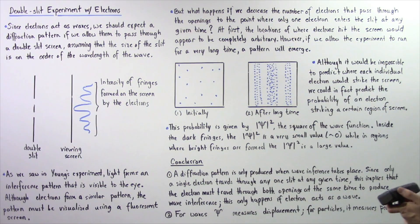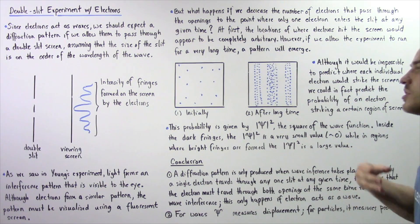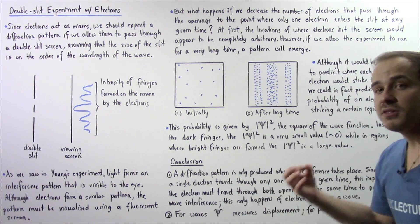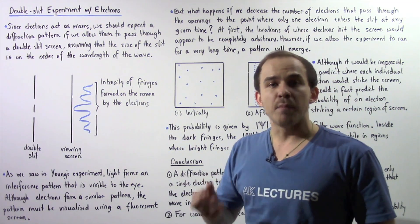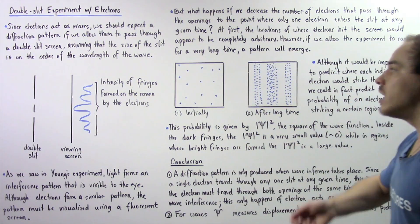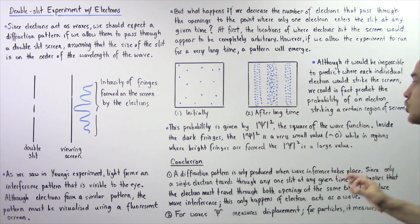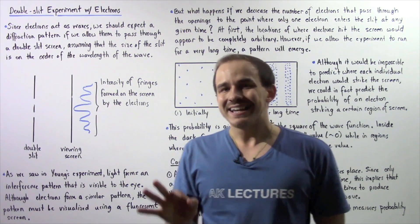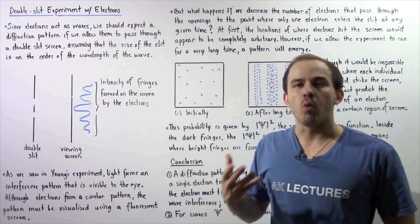The second conclusion is the following. When we treat electrons as waves, the wave function ψ measures the displacement — the amplitude — of those matter waves. On the other hand, if we treat electrons as particles, then the square of the wave function, known as the probability density ψ², describes the probability of finding an electron at a certain location at a certain time.